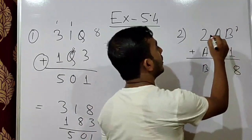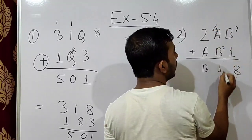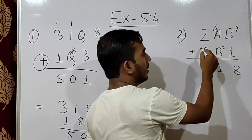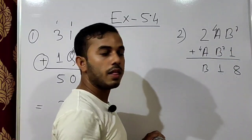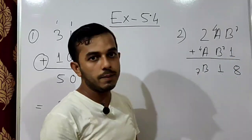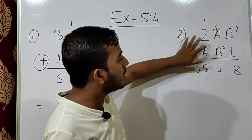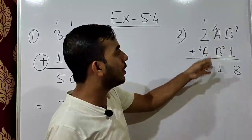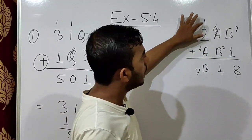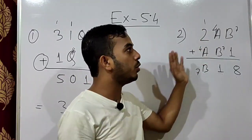With B as 7: 7 plus 1 is 8, unit digit 8 confirmed. Now in the tens column, A plus 7 gives a result with unit digit 1. We need the next number with 1 in unit place after single digit, which is 11. So A plus 7 equals 11, meaning A equals 4.